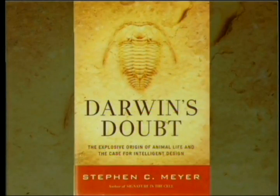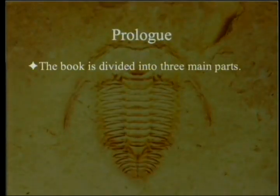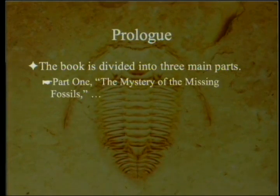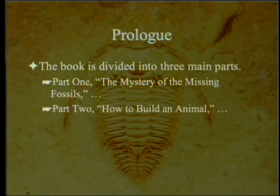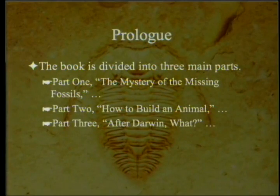The book is divided into three main parts. According to the prologue, in Meyer's own words: Part one, the mystery of missing fossils; Part two, how to build an animal, which has to do with the requirement for information; and Part three, after Darwin — what — which goes into what do you do if you give up Darwin.